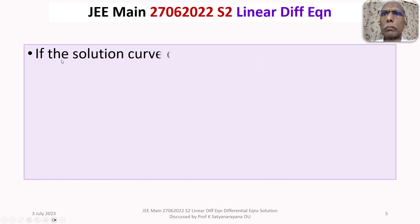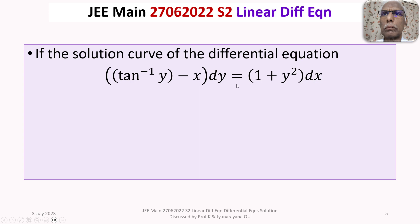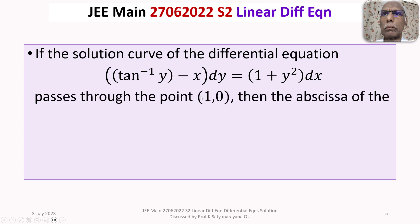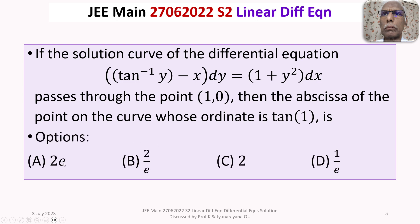The given question is: if the solution curve of the differential equation (tan inverse y minus x) dy equals (1 plus y squared) dx passes through the point (1, 0), then the abscissa of the point on the curve whose ordinate is tan(1) is. The four options are: (a) 2e, (b) 2/e, (c) 2, (d) 1/e.